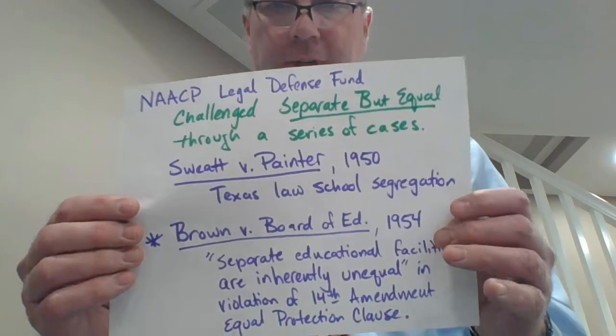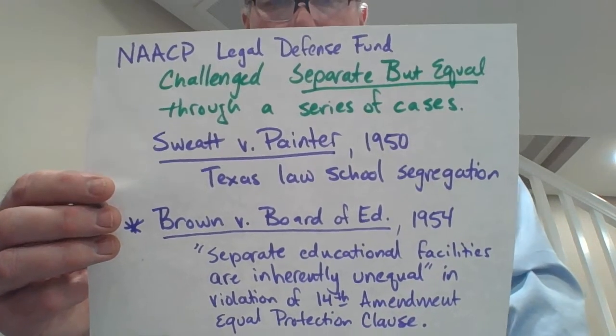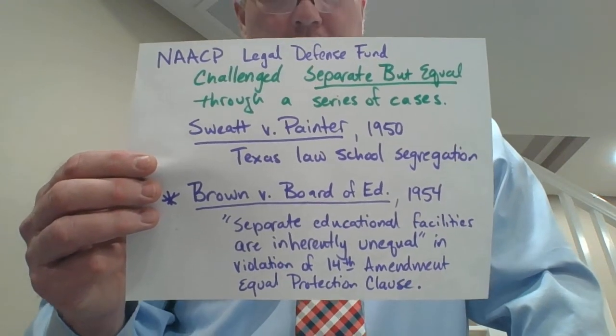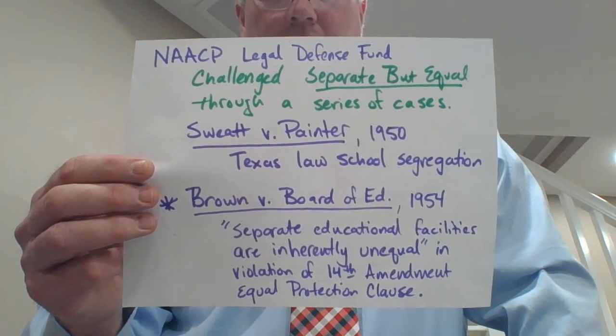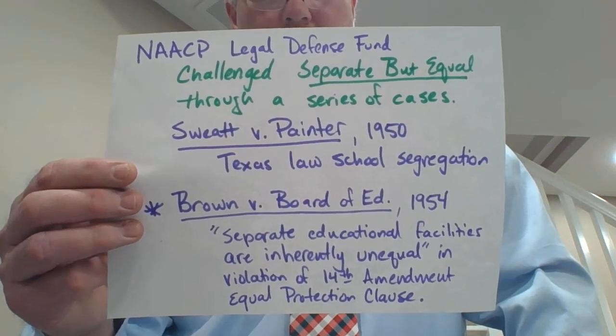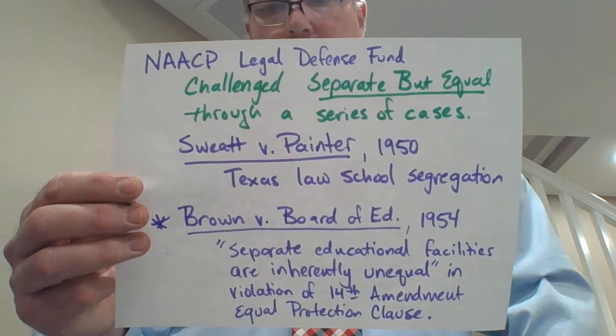To challenge this established system of Jim Crow segregation and denial of equality in violation of the 14th Amendment, the NAACP Legal Defense and Education Fund brought a series of lawsuits challenging separate but equal. I picked out two cases — Brown v. Board, one of the 15 required cases of the AP curriculum, and Sweatt v. Painter in 1950, which I think is an important precedent leading to Brown v. Board.